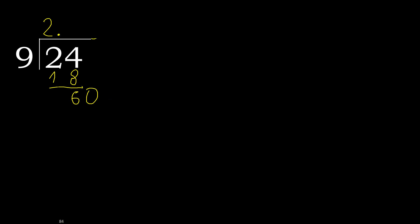9 multiplied by 6 is 54. 9 multiplied by 7 is 63, which is greater. Therefore multiplied by 6: 54. Subtract.